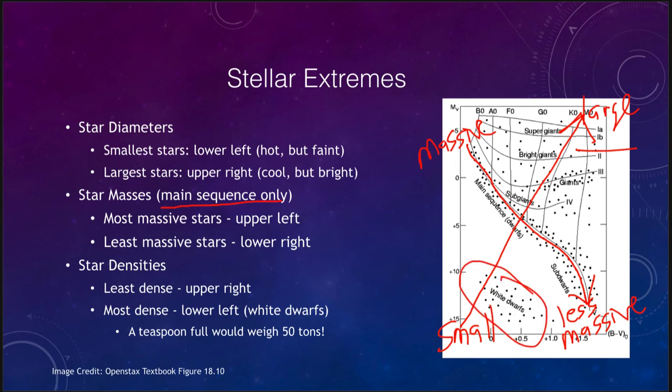White dwarf stars, which we'll discuss in future videos, are extremely dense — so dense that just a teaspoon of their material would weigh 50 tons. They have had essentially all of the space squashed out of them and are as tiny as a star can possibly be while still being made of ordinary atoms, with electrons compressed so close together they are essentially touching.